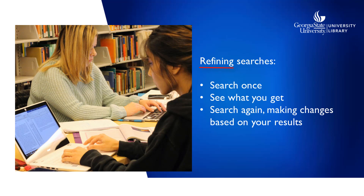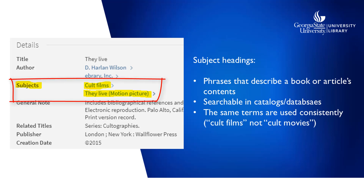Items in library catalogs or databases are tagged with subject headings. These are standardized terms used to describe sources. They give you a quick idea of what the book or article is about. When we say standardized, we mean that the same terminology is used to describe related sources. When you find a source that's relevant and useful for your project, look at its subject headings. You can often discover new, useful search terms this way, and you may learn some new vocabulary used by scholars or specialists.